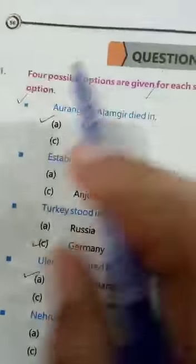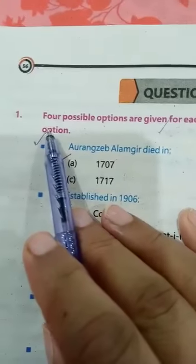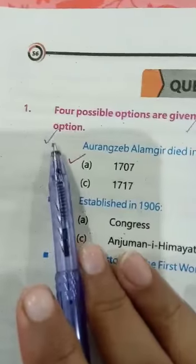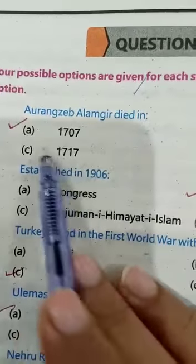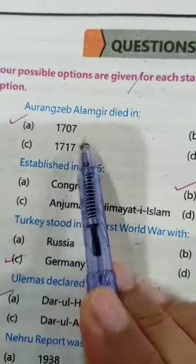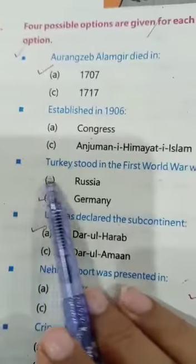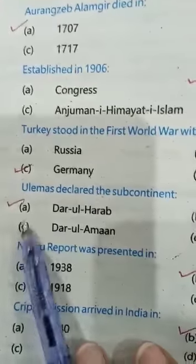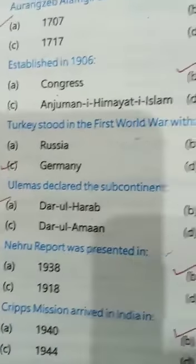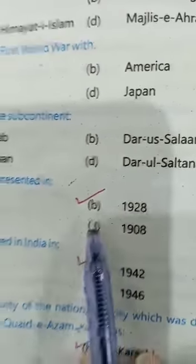Here are the objectives of unit number two. For each statement, four possible options are given. Mark the correct option. Number one: Aurangzeb Alamgir died in 1707 — put the tick on option A. Muslim League was established in 1906 — put the mark on option B. Turkey stood in the First World War with Germany — put the mark on option C. Ulama declared the subcontinent Darul Harab — put the mark on option A. Nehru Report was presented in 1928 — put the mark on option B.